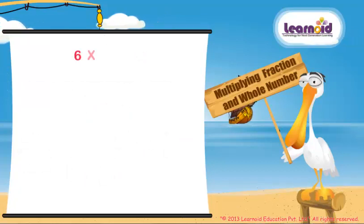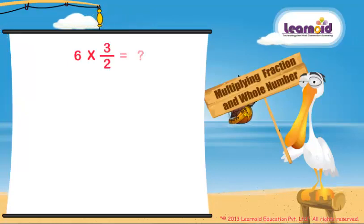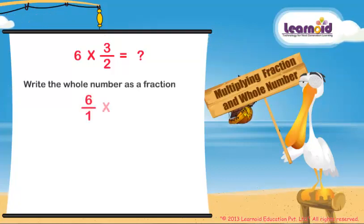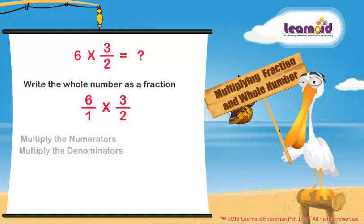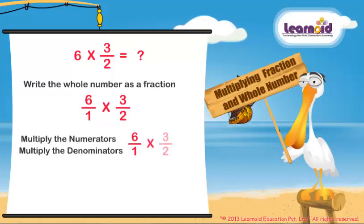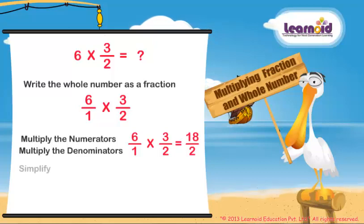We have to multiply 8, which is a whole number, and 3/4, which is a fraction. First, write the whole number as a fraction: 8/1 into 3/4. Multiply the numerators and multiply the denominators: 8/1 into 3/4 equals 24/4.